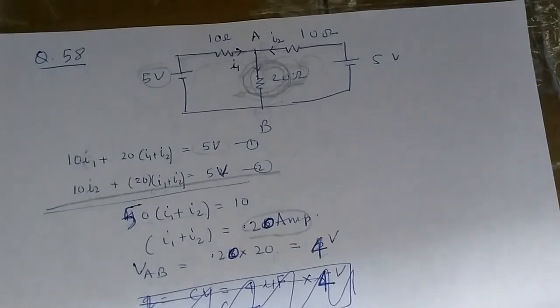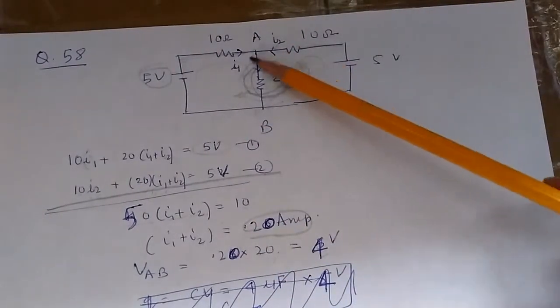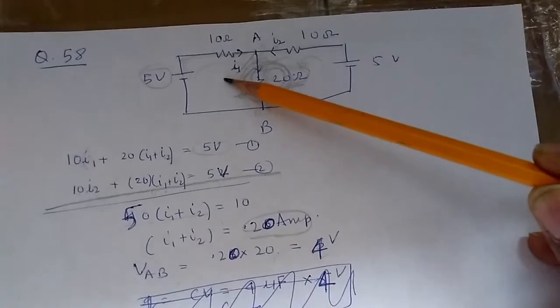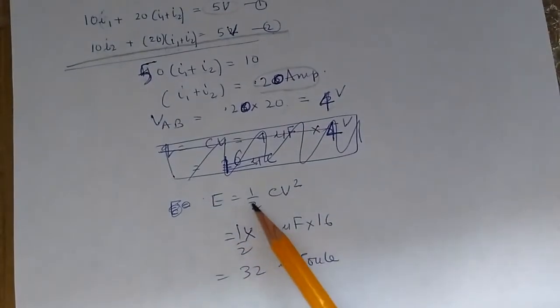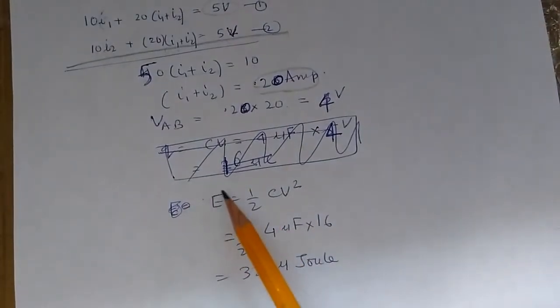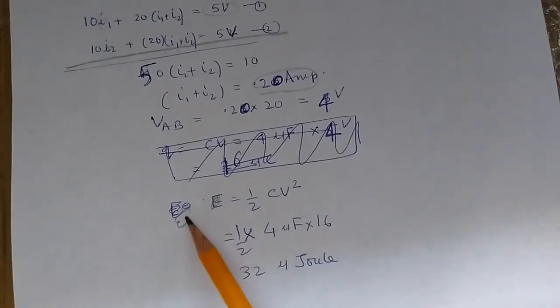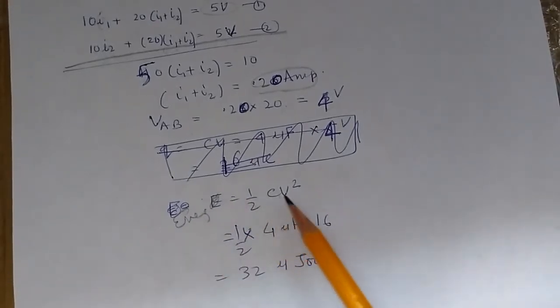Now we can solve the second question. If we add a capacitor here, what is the energy stored in it? The energy formula is—we'll call it energy—equals half CV squared.